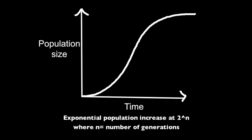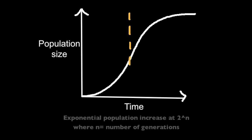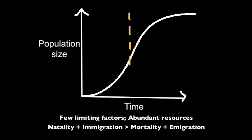During the exponential phase, there is a rapid exponential increase in population as the name suggests. There are very few limiting factors to the population growth in this phase. Natality and immigration are greater than mortality and emigration; however, please note that mortality and emigration are not zero in this phase — they are just less than natality and immigration.